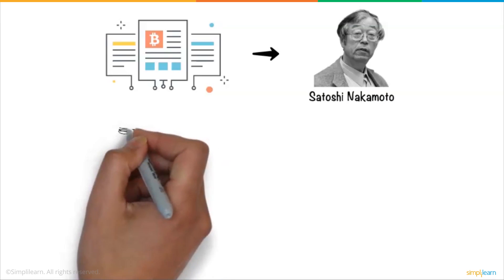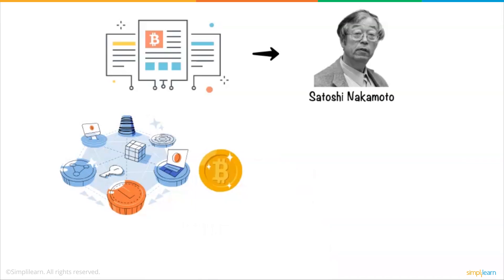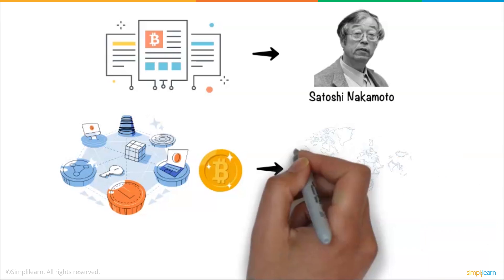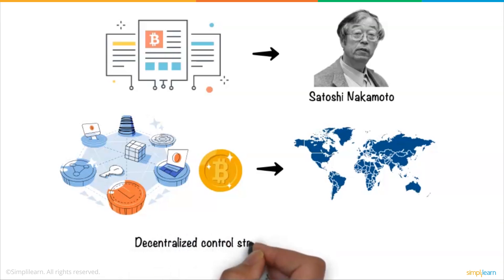Suggesting a way of creating a system for a decentralized currency called Bitcoin. Its motive was to show the world that a decentralized control structure can work with the institutional government.